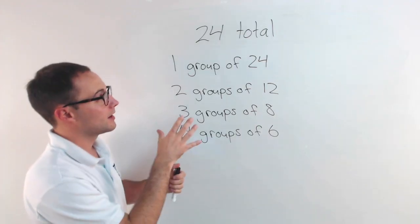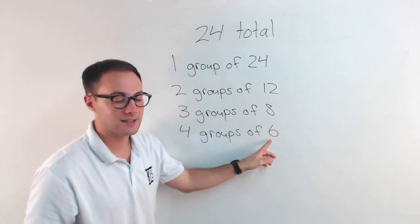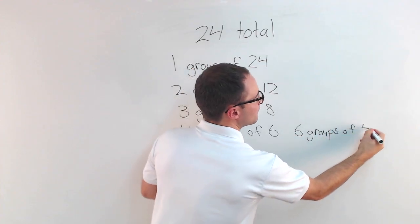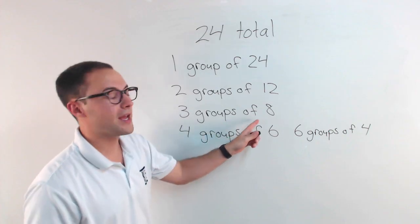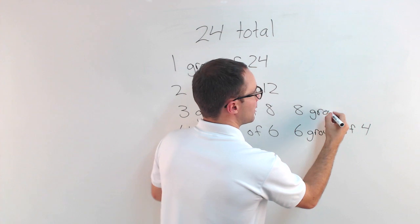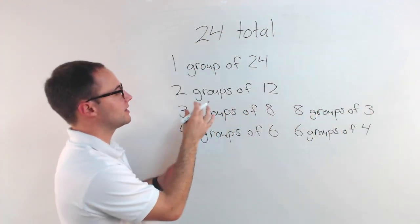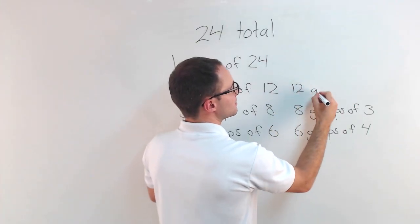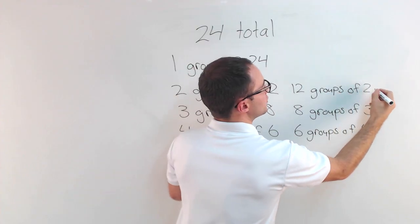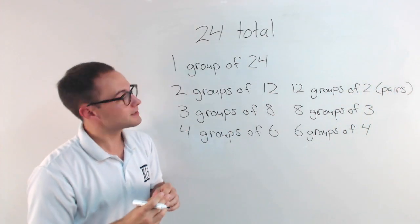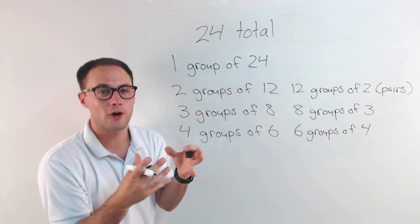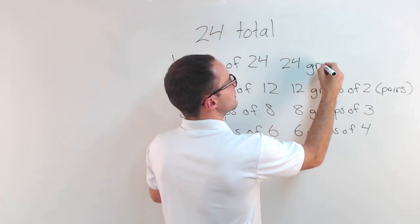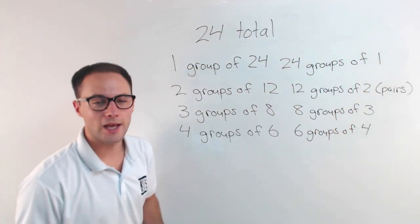For this problem, I have some other options. I could do four groups of six, but then I could also do the opposite of that. I could also do six groups of four. Instead of three groups of eight, I could do eight groups of only three desks. Instead of just two big groups of 12 desks, I could do 12 groups of only two people, basically putting them in pairs. And then finally, instead of one big group of 24, I could do 24 groups of just one person, so basically everyone is by themselves. So there really aren't any groups.